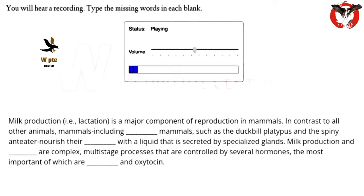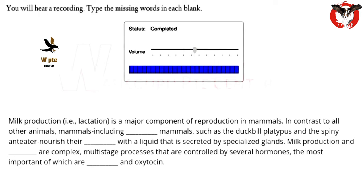Milk production — that is, lactation — is a major component of reproduction in mammals. In contrast to all other animals, mammals, including primitive mammals such as the duck-billed platypus and the spiny anteater, nourish their offspring with a liquid secreted by specialized glands. Milk production and secretion are complex, multi-stage processes controlled by several hormones, the most important of which are prolactin and oxytocin.